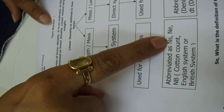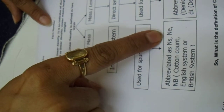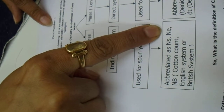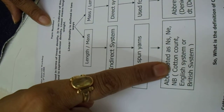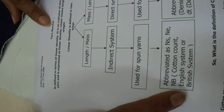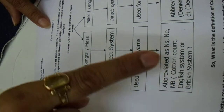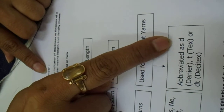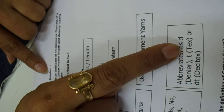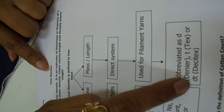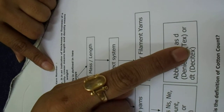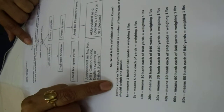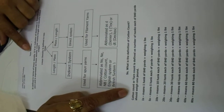The abbreviation for the indirect system for spun yarns is Ns (capital N, small s). Ne (capital N, small e) is the English system, also called cotton count or the British system. For filament yarns, the abbreviations are D for denier, T for tex, and DT for decitex.